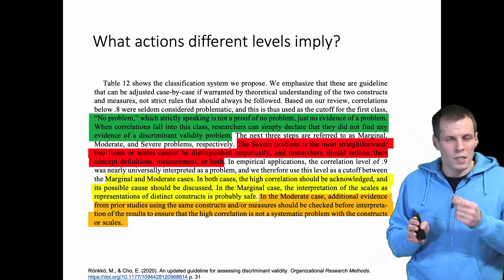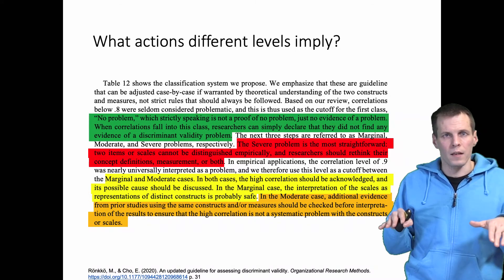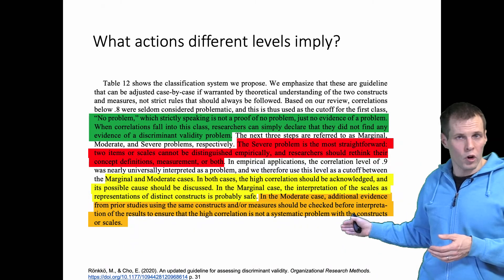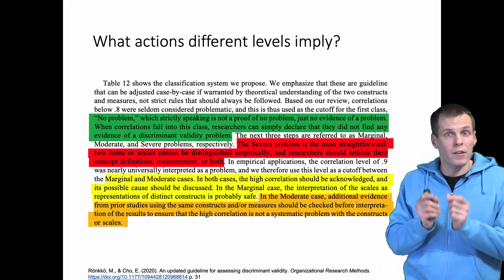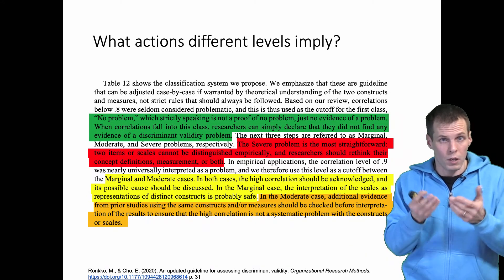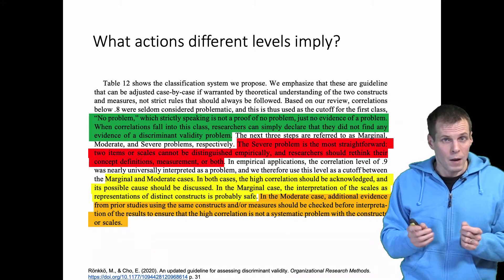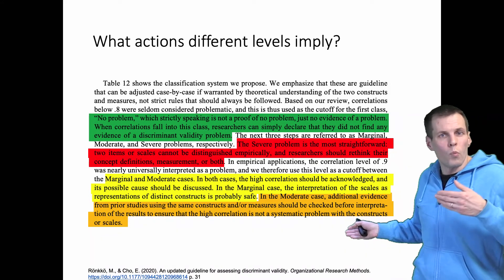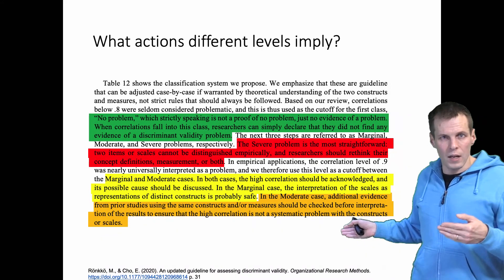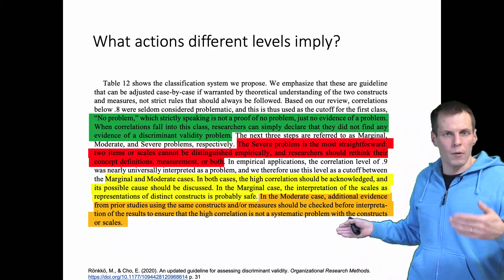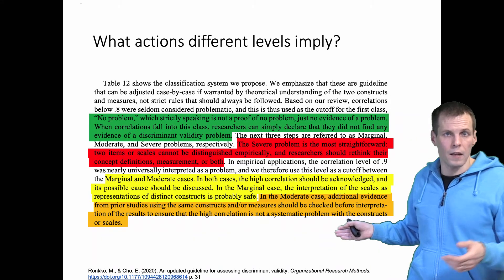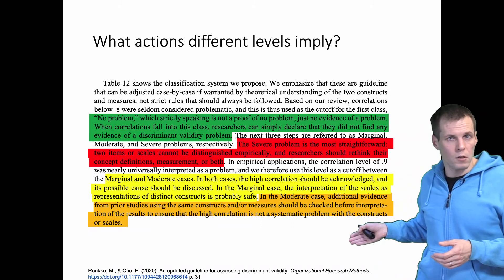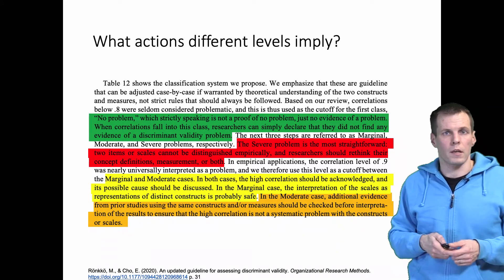In moderate cases, you also need to demonstrate that there is no systematic problem with the scale. If everyone using two scales to measure two constructs always gets a moderate or severe problem, then we know something is problematic either with the concepts or with the scales. So if you have a moderate problem, you need to look at what kind of discriminant validity evidence prior studies have presented for those scale pairs and then make a justified decision on what to do based on the prior evidence. This is a lot more serious than simply a marginal case.